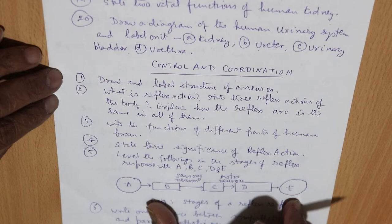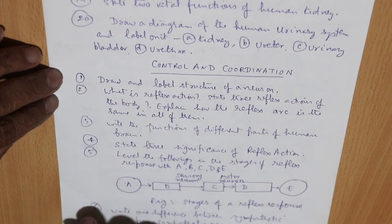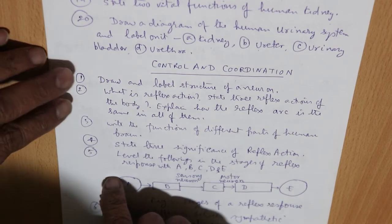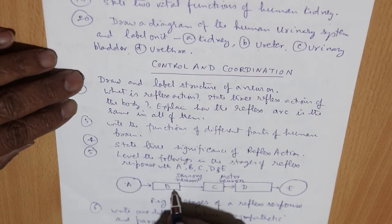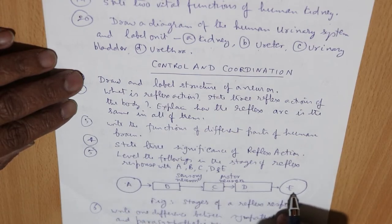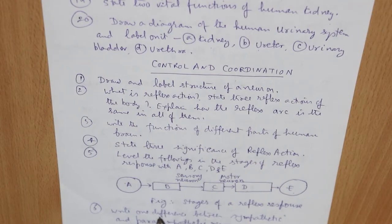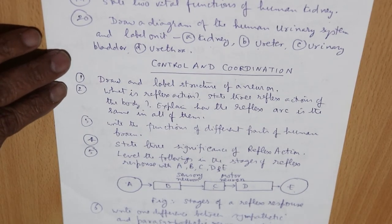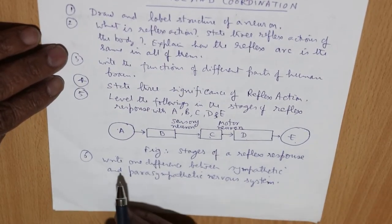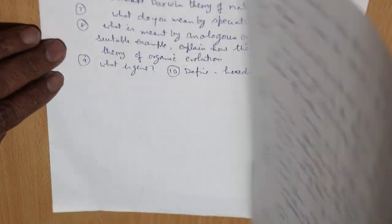Label the following stages of reflex response with A, B, C, D, and E — during reflex action, identify what each stage represents. Write a single difference between the sympathetic and the parasympathetic nervous system.